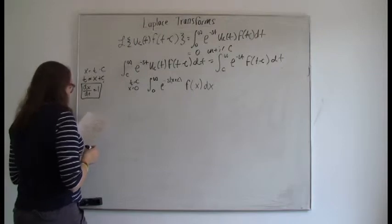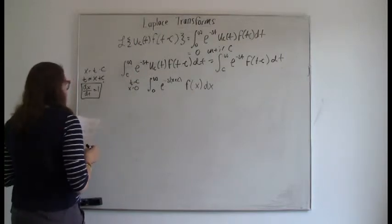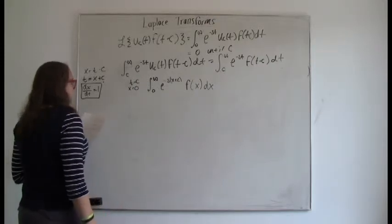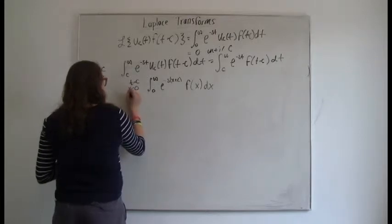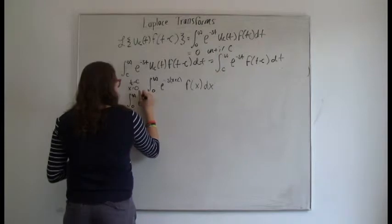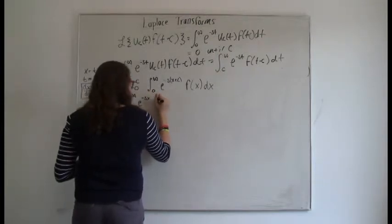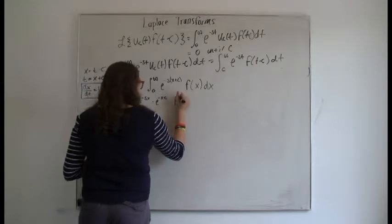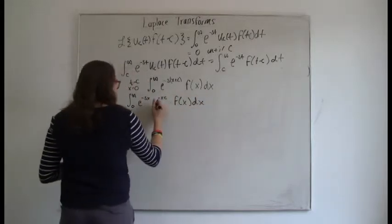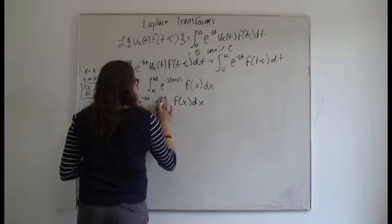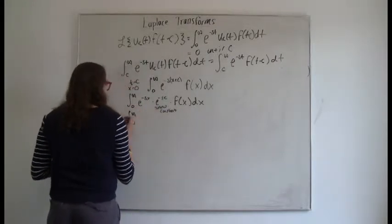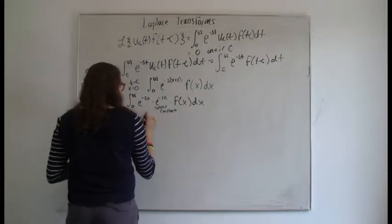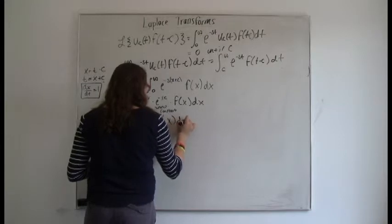Now we can separate the exponent into two separate e terms. This is equivalent to the integral from zero to infinity of e to the negative sx times e to the negative sc times f(x) dx. Since e to the negative sc is a constant — not dependent on x — we can pull it out in front of the integral.